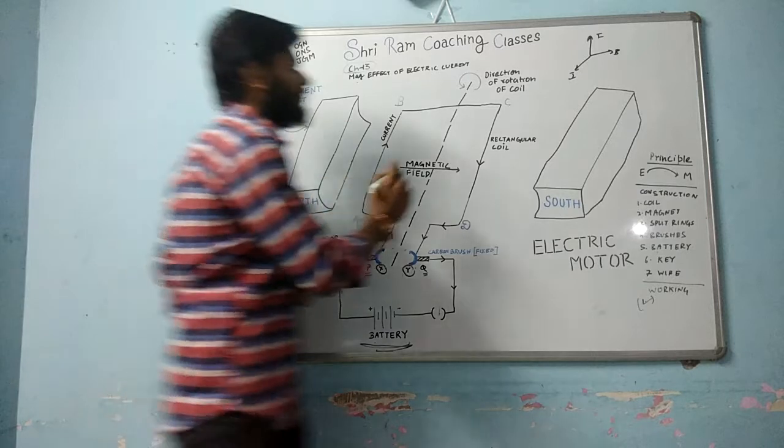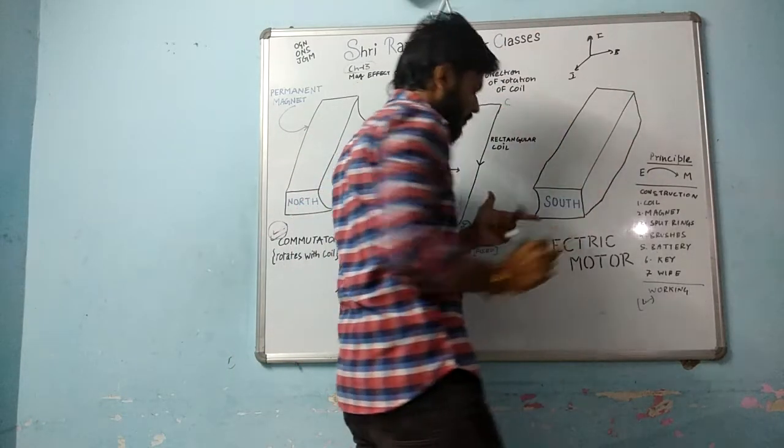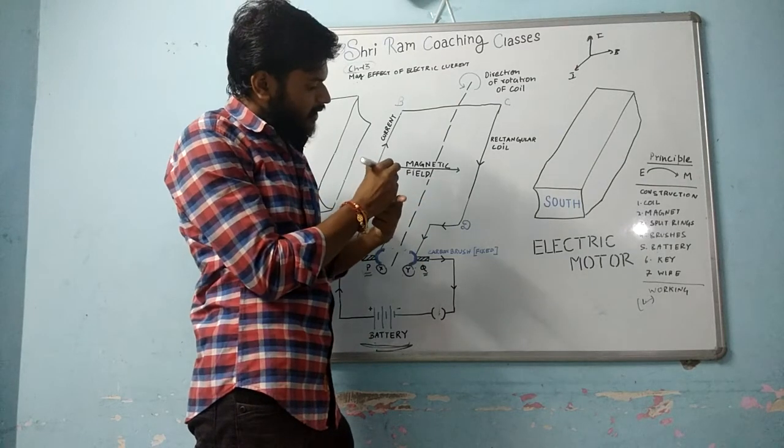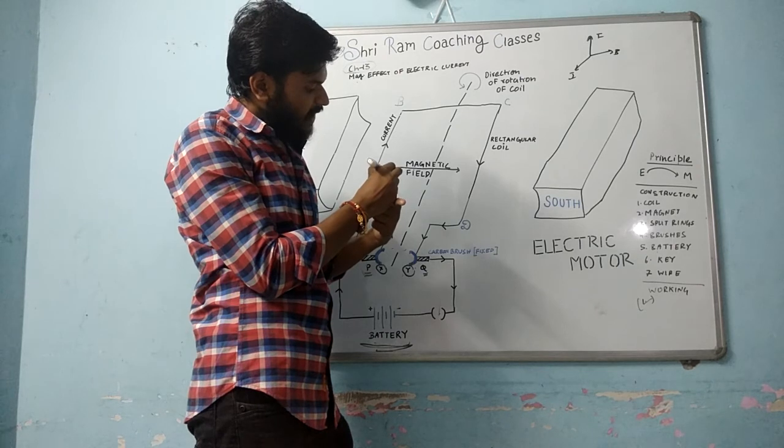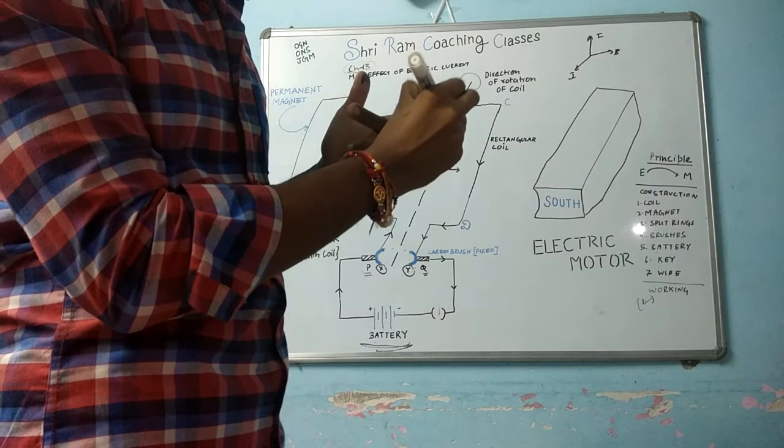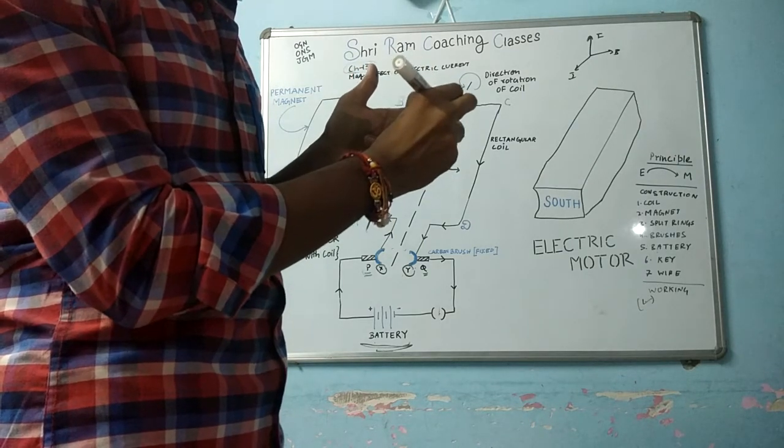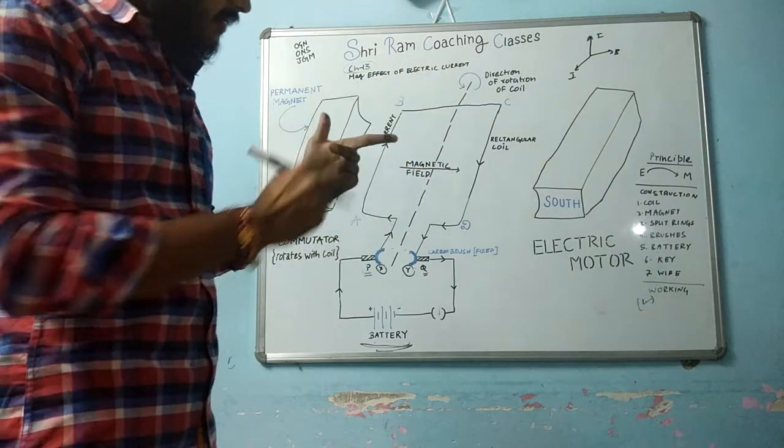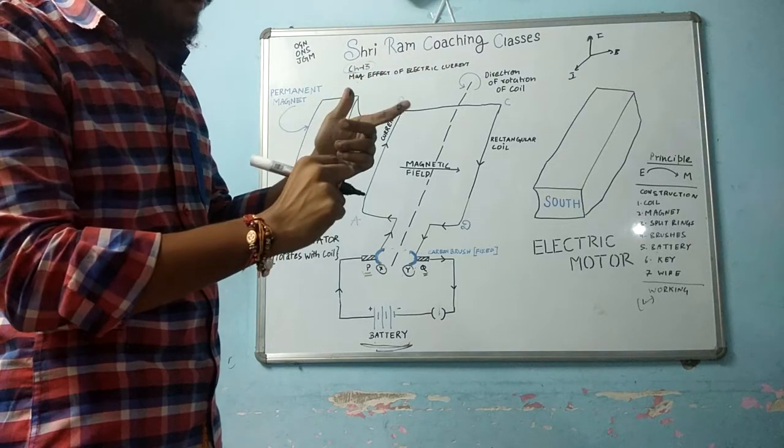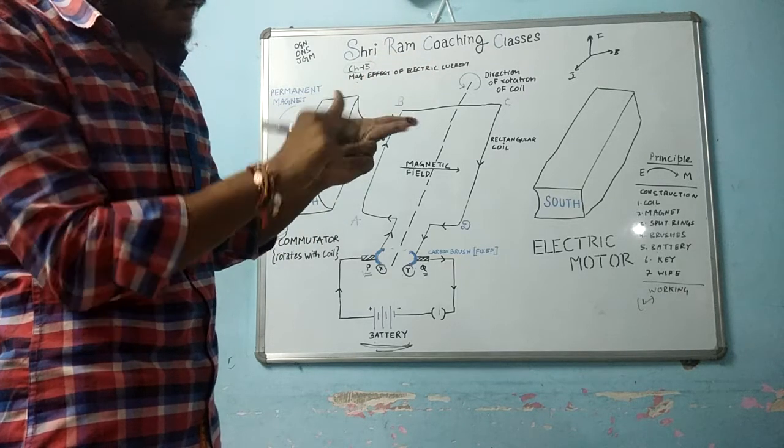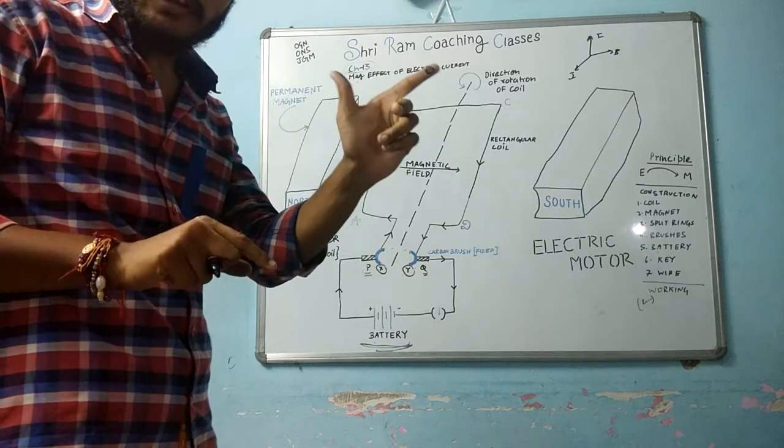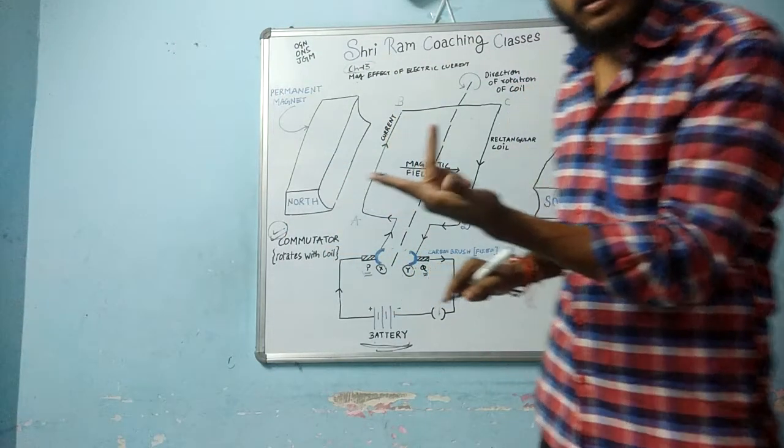We have to study Fleming's left hand rule. What is the rule? We have three fingers at 90 degrees. This is my thumb representing F for Force. This is B for magnetic field. And I for current. If we have magnetic field from this point to this point in this direction, and current in this direction, then the force direction is determined by the thumb.